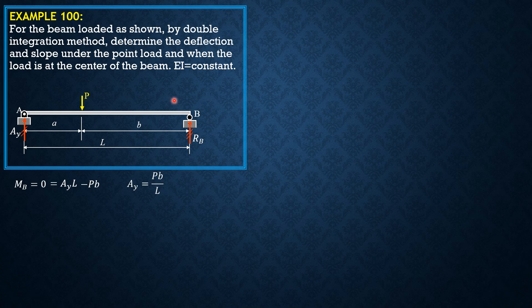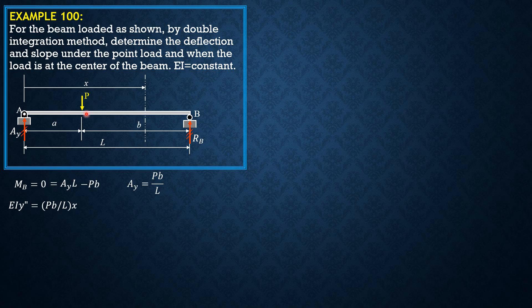We establish the moment equation at this section so that it covers the entire span. So EIY double prime equals the moment at this section: EIY double prime equals PB over L times X minus P times the quantity X minus A.